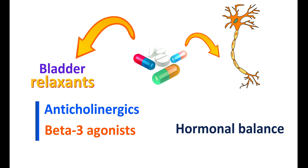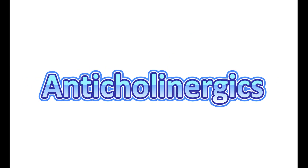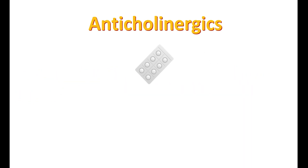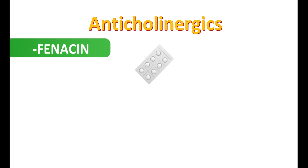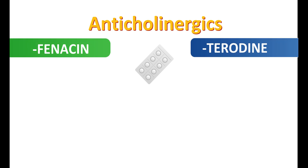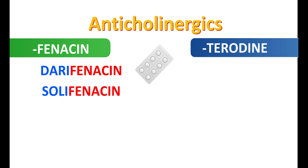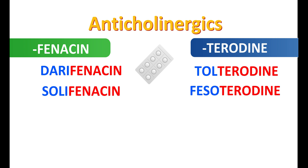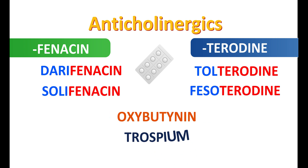The first category is anticholinergics. There are two suffixes seen in anticholinergic medication names. A few drug names end with the suffix "-fenacin" and a few end with "-terodin". Darifenacin and solifenacin come under the first group, while tolterodine and fesoterodine come under the second group. Other drugs like oxybutynin and trospium also fall into this category.